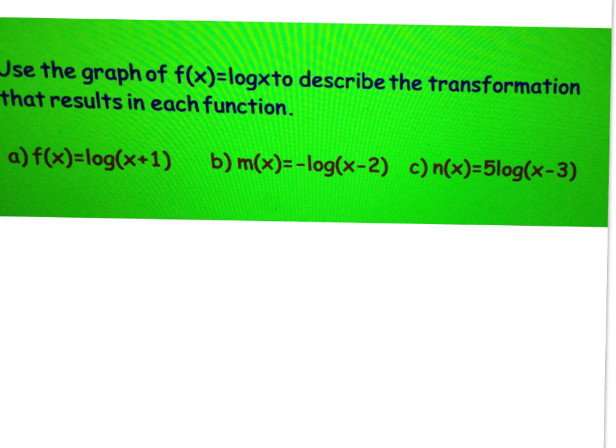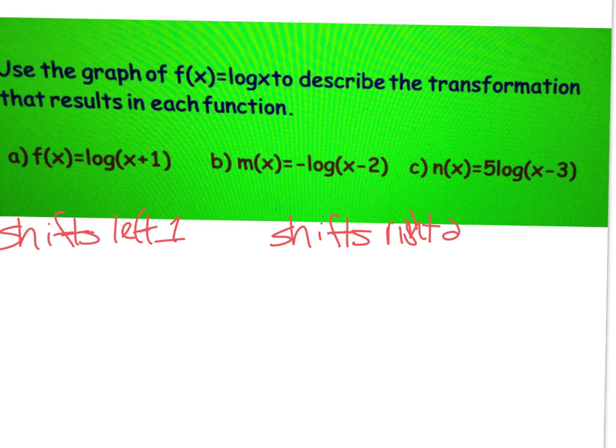It says use the graph that we just looked at to describe the transformations. They would give you x plus 1 because it's inside. You've done these forever now. You would say that it shifts left 1. The second one. Two things. It shifts right 2 because you have a 2 inside. And it also reflects across the x-axis because there's a negative in the front. Part C, you would say it shifts right 3 because of the minus 3. And it's also been vertically stretched by 5 because there's a 5 in front of your log.